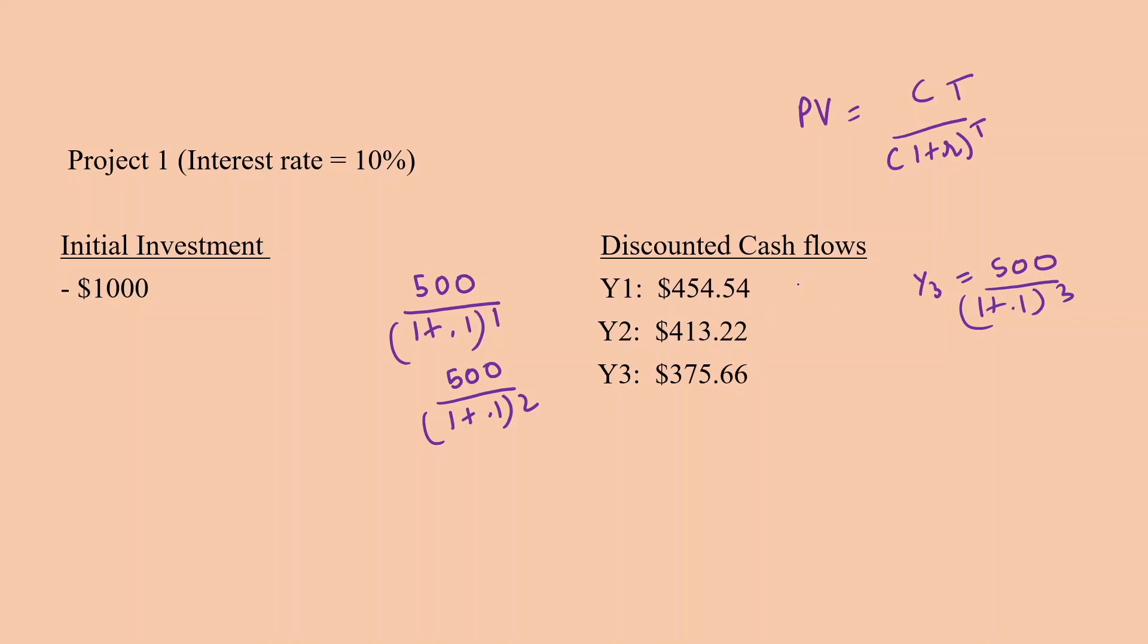So you add the cash flows for the three years and clearly their sum is greater than $1,000. So our discounted payback period is less than three years and we need to figure out exactly by how much.